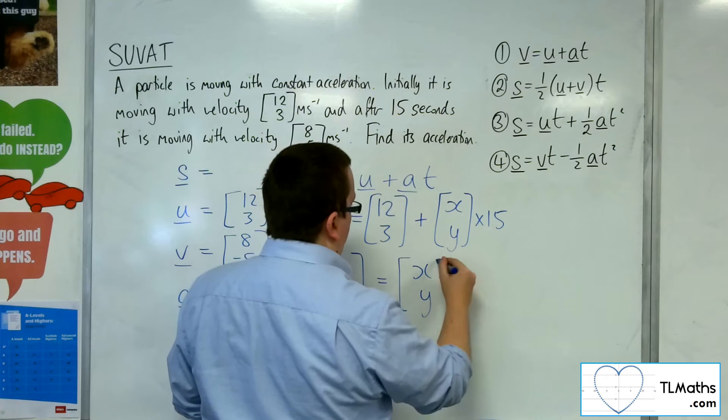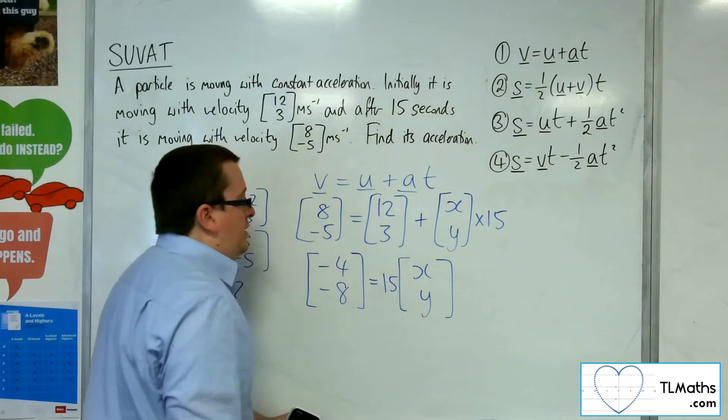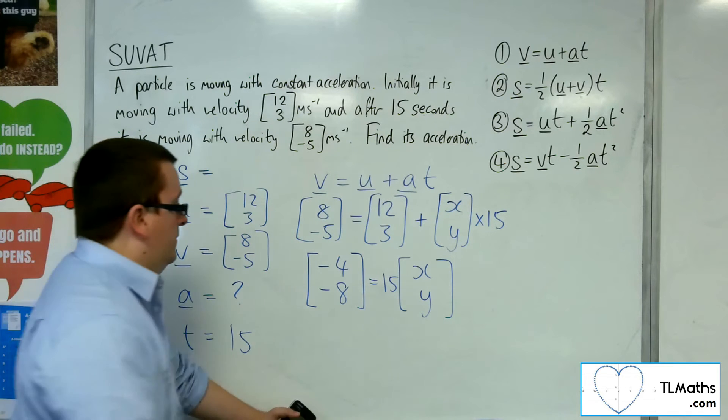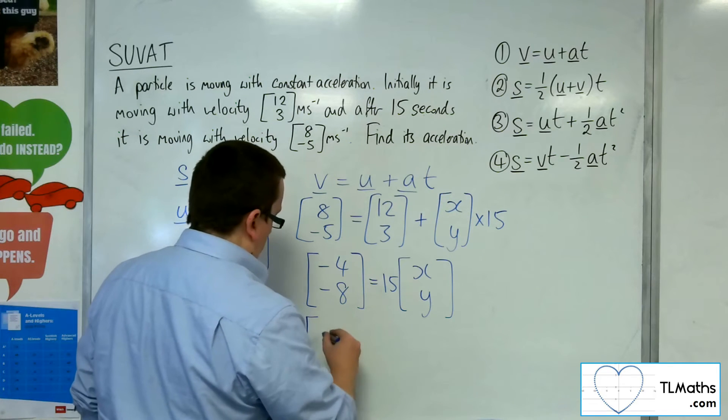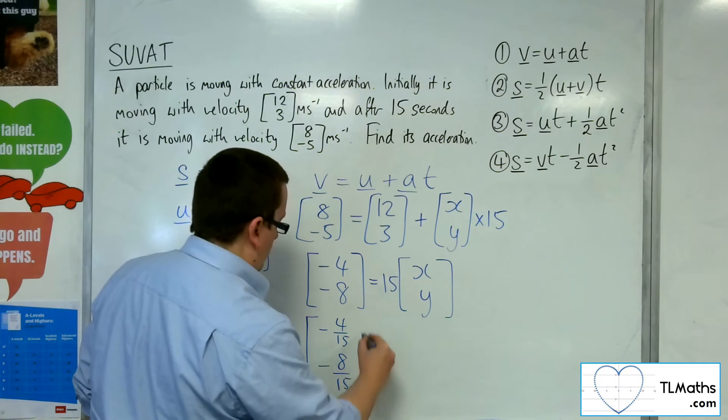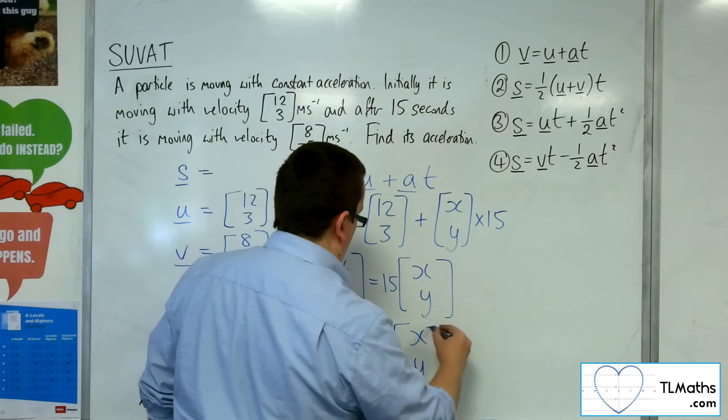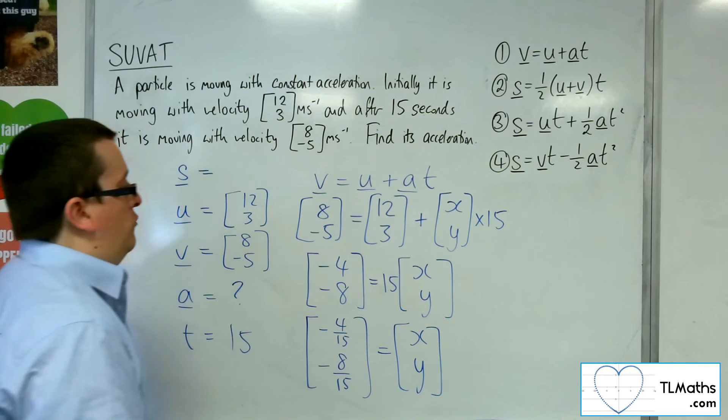I'll keep the 15 outside, I think. And then I can divide both sides by 15. So, minus 4 fifteenths minus 8 fifteenths is equal to x, y. Which is the acceleration.